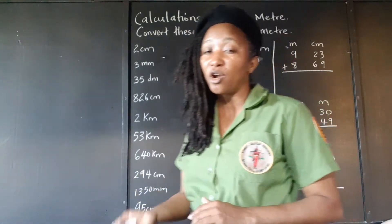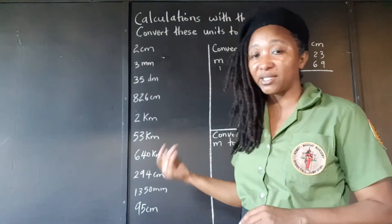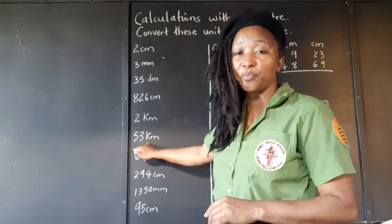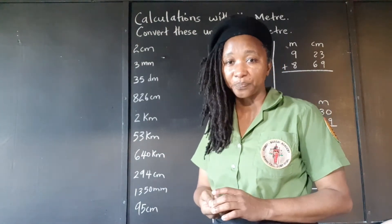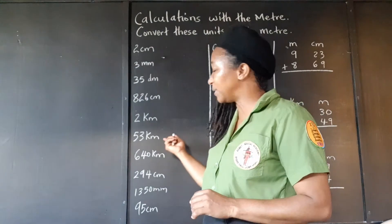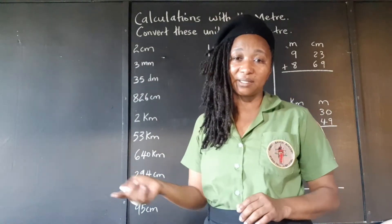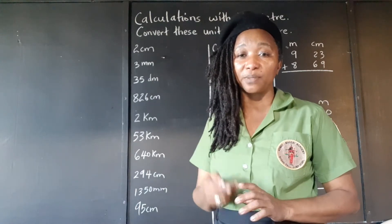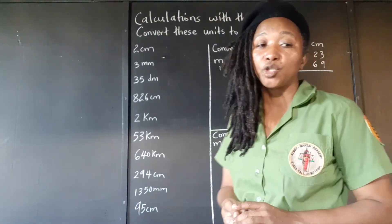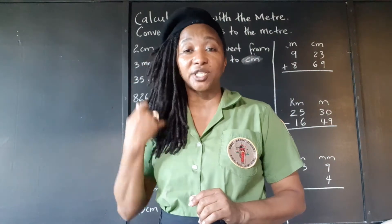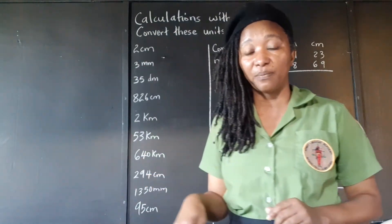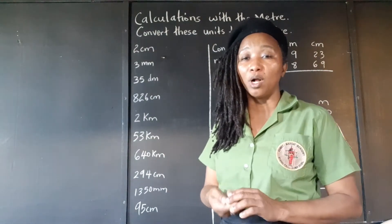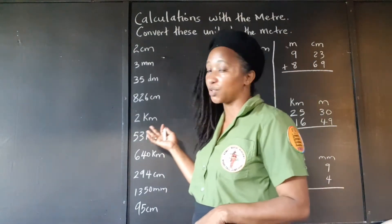A centimeter is one hundredth of a meter, so it takes one hundred centimeters to make a meter. Kilometers — the prefix 'kilo' means one thousand, so it takes one thousand meters to make a kilometer. If we're changing from meters to kilometers, smaller unit to bigger unit, we divide — divide the meters by a thousand to get kilometers. If you're changing kilometers to meters, you multiply by a thousand.